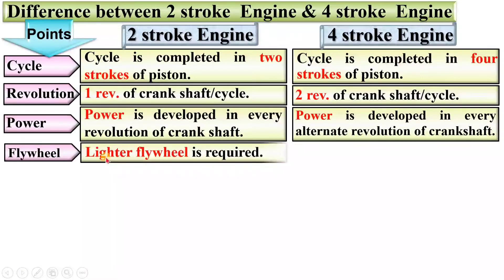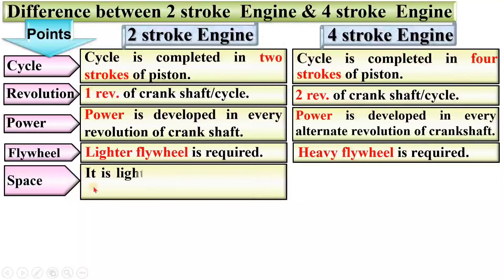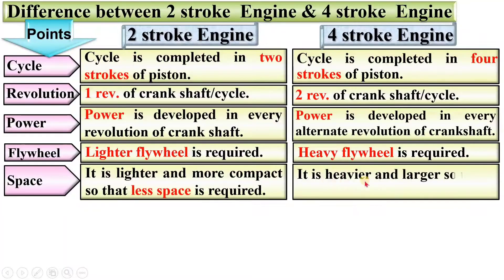Next point, flywheel. In the two-stroke engine, a lighter flywheel is required. In case of a four-stroke engine, a heavy flywheel is required. Regarding space, the two-stroke engine is lighter and more compact so that less space is required. In case of a four-stroke engine, it is heavier and larger so that more space is required, because a heavy flywheel is required.